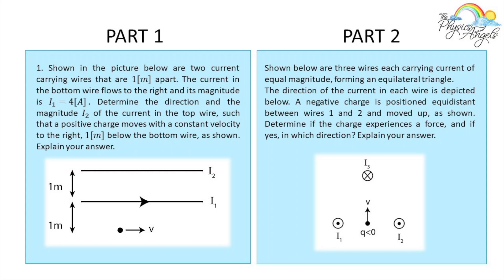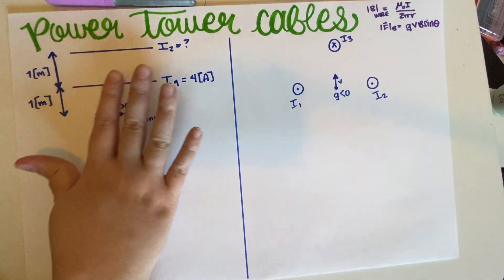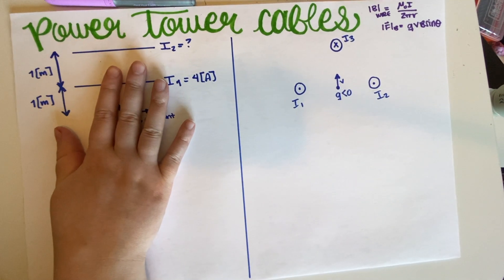We have two current-carrying wires that are one meter apart. The current in the bottom wire flows to the right with a magnitude of 4 amps. We have to determine the direction and magnitude of the current in the second wire — the one on top — such that a positive charge moves with a constant velocity to the right, one meter below that wire, as shown. Let's solve part A first before moving to part B.